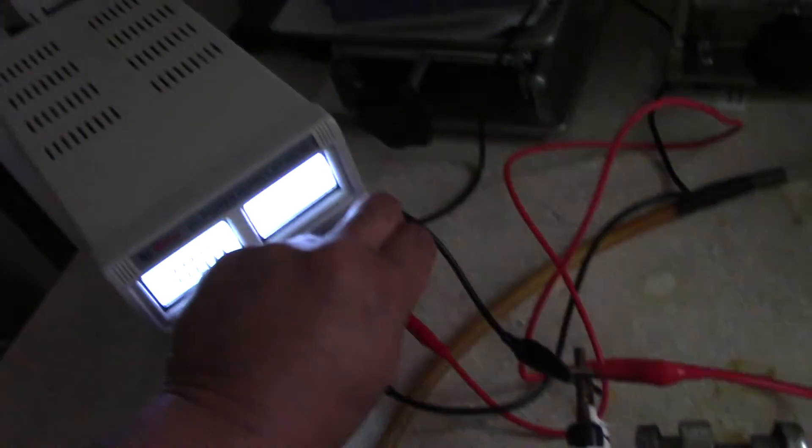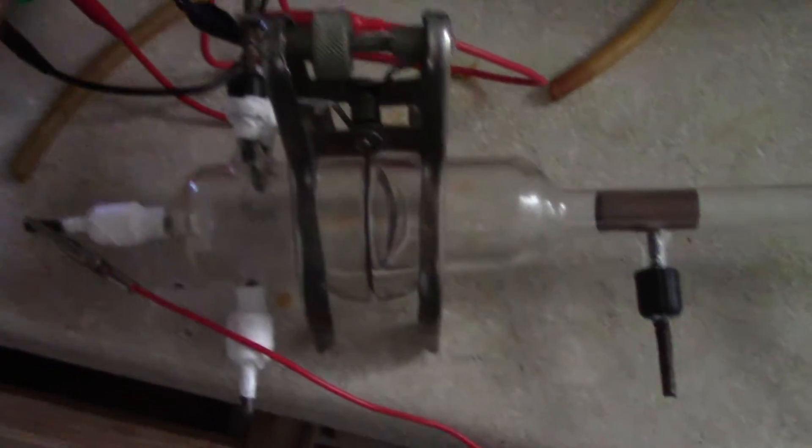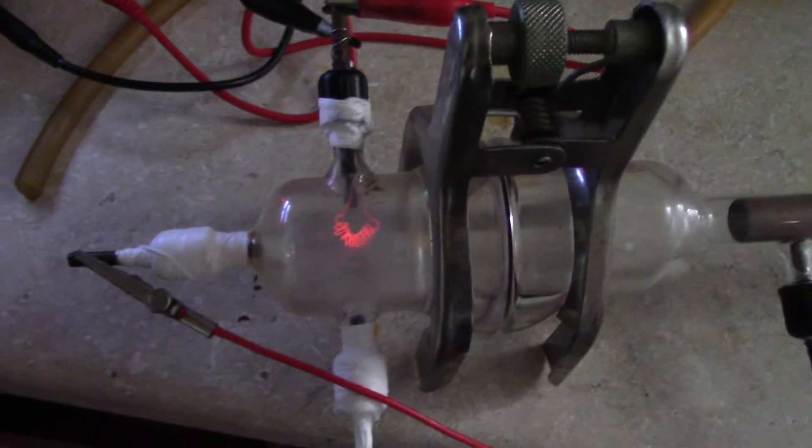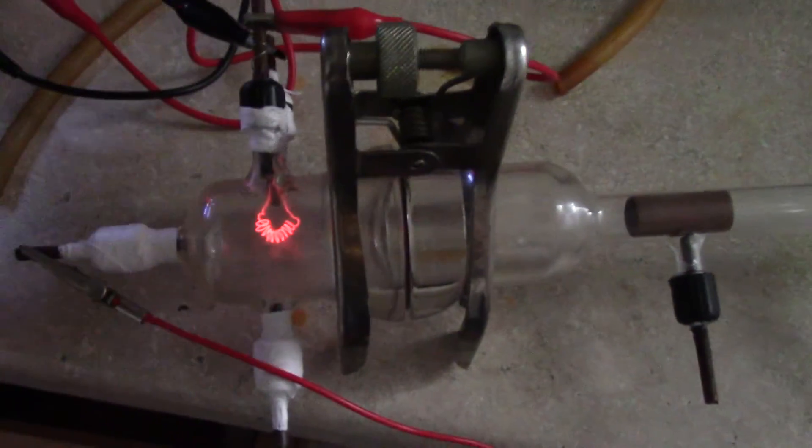So usually set it on about 6-7 volts to start to cast enough electrons that'll go rushing down the tube here.